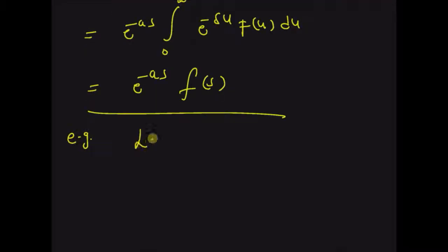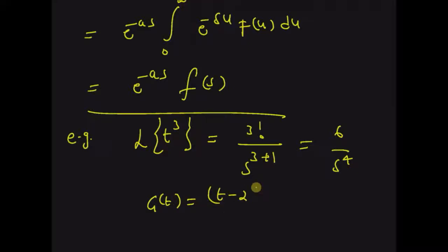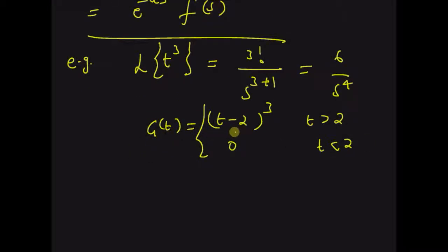Now let us look at an example. We know that the Laplace transform of t³ is equal to 3! divided by s^(3+1), which is 6 / s⁴. Now we have a function g(t) defined as (t - 2)³ for t greater than 2, and 0 for t less than 2. Clearly this is g(t) = f(t - a) where f(t) = t³.